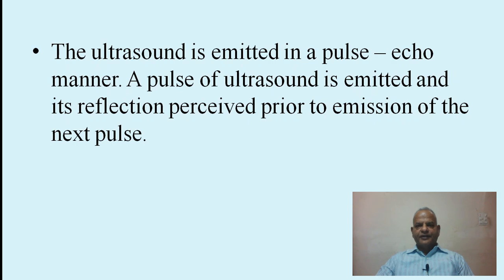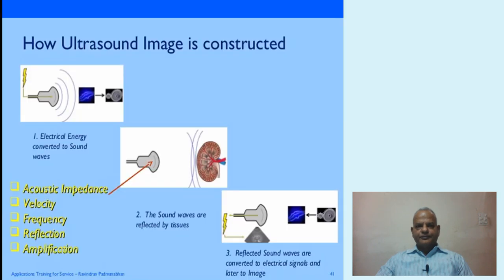Here you can see how ultrasound images are constructed: electrical energy is converted to sound waves, the sound waves travel through the tissues and are reflected back, and the reflected sound waves are then converted to electrical signals and later to images.